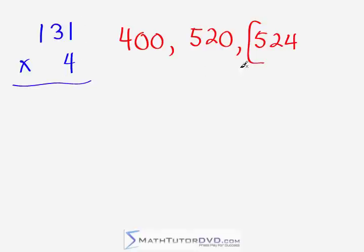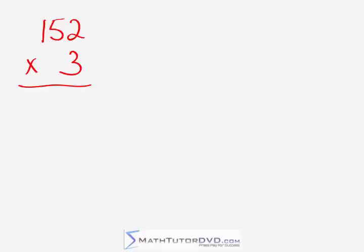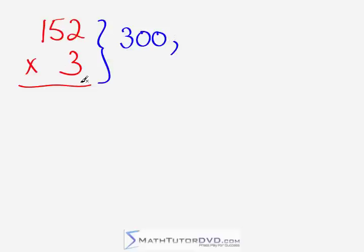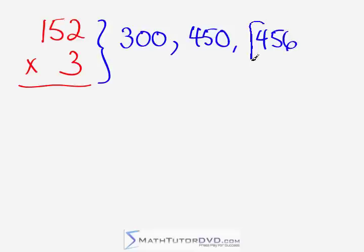If it's impossible for you to do it silently, you can certainly say the addition steps in your head — whatever is easier. Our next problem is 152 times 3. Let's pick up the pace: 3 times 100 — first intermediate answer, 300. Then 50 times 3 gives 150, so 300 plus 150 is 450 — that's the next answer. Lastly, 3 times 2 is 6, so 456 is the final answer. You think to yourself: 300, 450, 456.